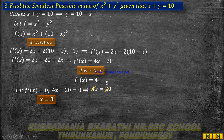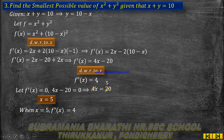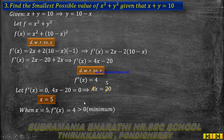Now we apply the second derivative test to confirm maximum or minimum at x equals 5. f double dash of x equals 4. Since 4 is greater than 0, the function is at a minimum at x equals 5.